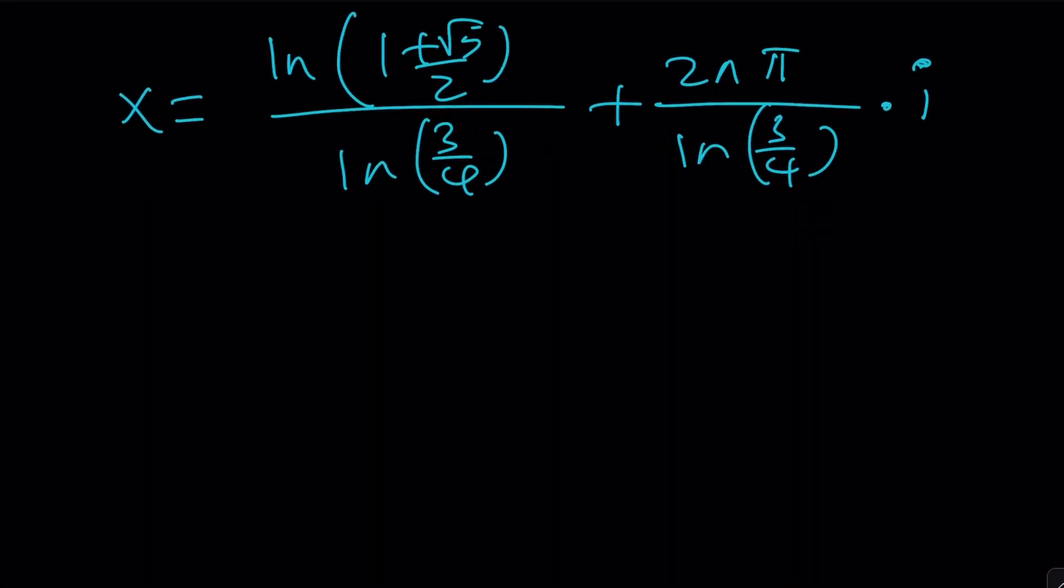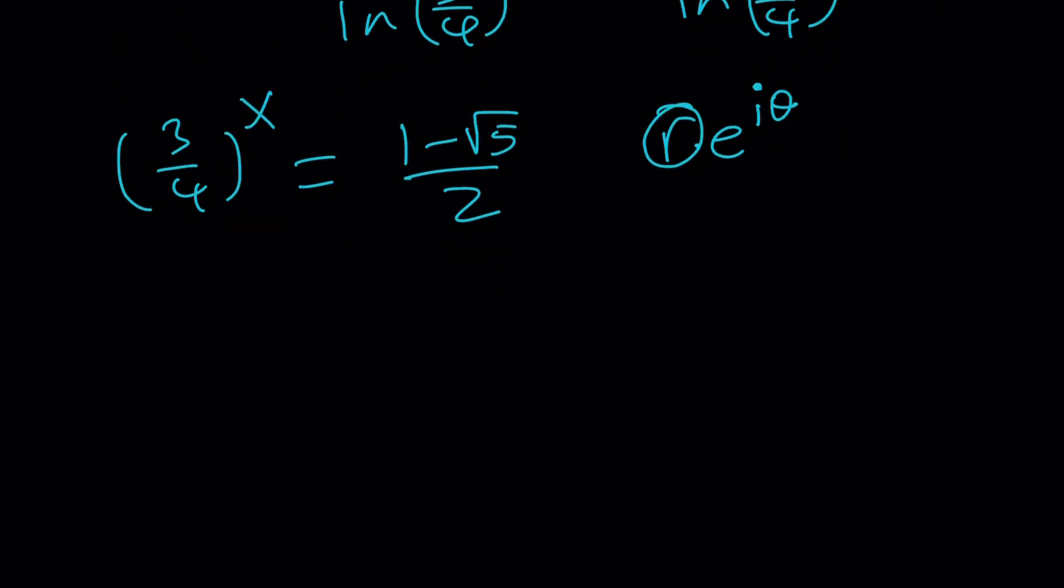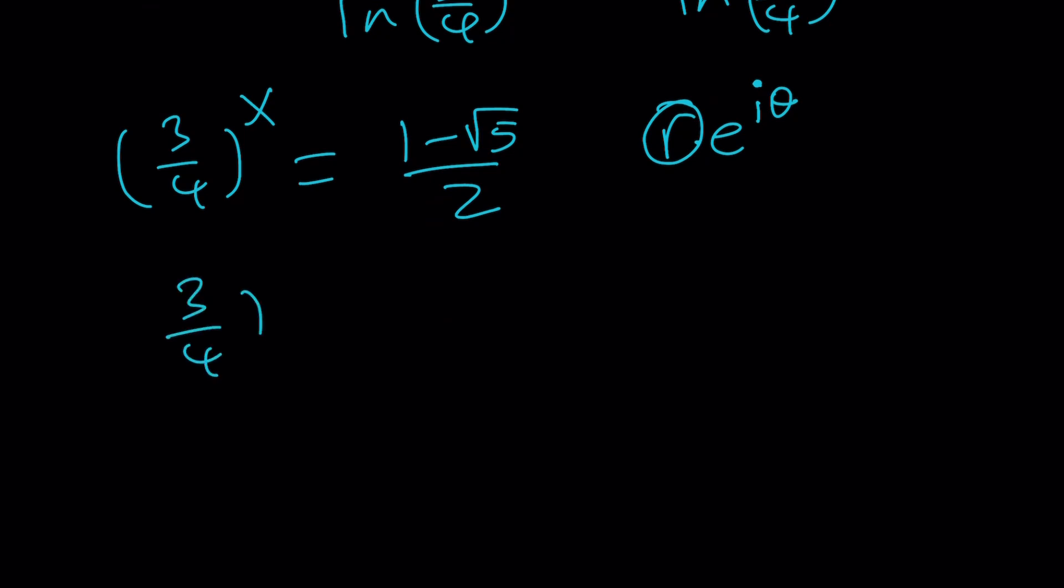We can do the exact same thing for the other u value. Let's go ahead and take a look. But, remember, one thing that's important is that that u value is negative. That's less than 0. So, you've got to be extra careful. Why? Because when you take the absolute value, like when you write a complex number as r times e to the i theta, r is always non-negative, but this number is negative. So, how do we do that? We're going to take the absolute value and use it as r. So, let's go ahead and do it.